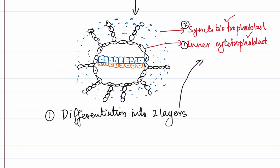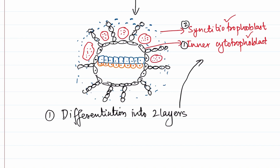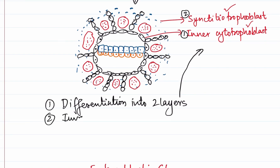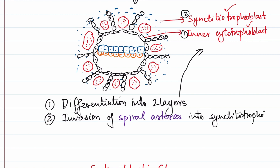Within the syncytiotrophoblast, spaces will develop — what we call lacunae. The lacunae are formed because of the invasion of spiral arteries. The spiral arteries are required because the embryo has grown larger and now derives nutrition from these uterine spiral arteries, since the placenta has not yet been developed. So the second event is the invasion of spiral arteries into the syncytiotrophoblast.